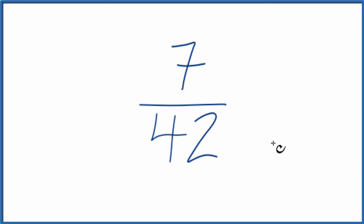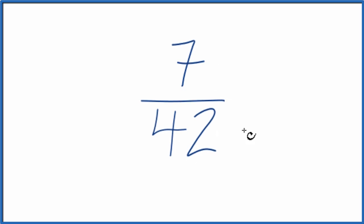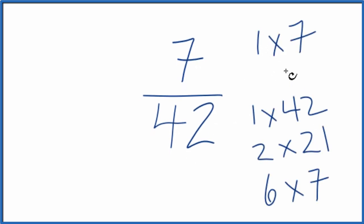To do that, we need to find a common factor, something that goes into 7 and 42. So if I write the factors for 7 and 42, I can see the greatest common factor is 7.